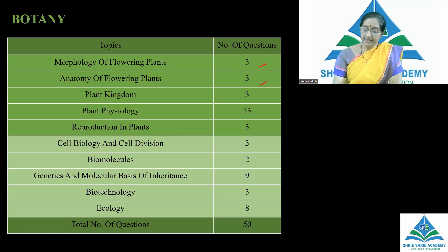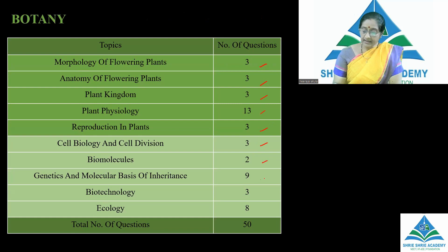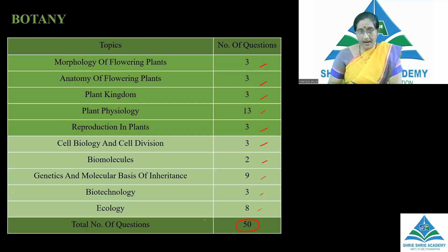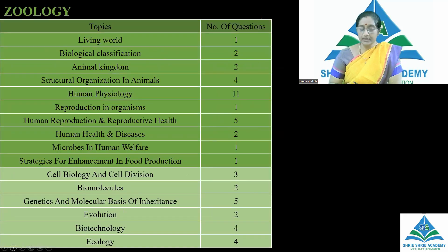The dark color shaded areas are exclusively related to botany, whereas the light color or taller zones indicate where questions were seen in both botany and zoology. The total number of questions which appeared from botany is 50. Coming to zoology, these are the questions from the leading world: one question.